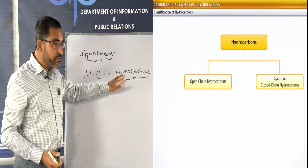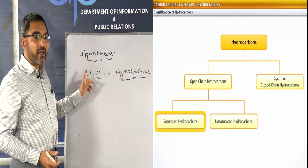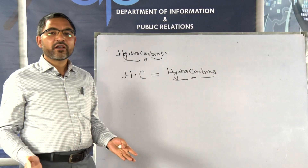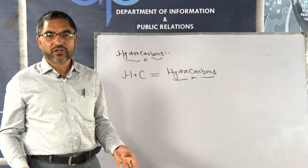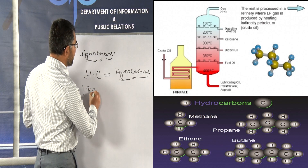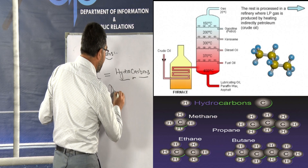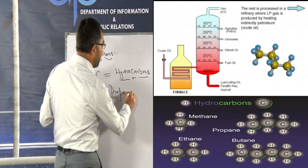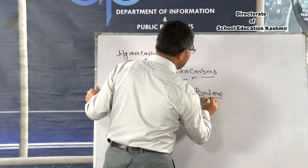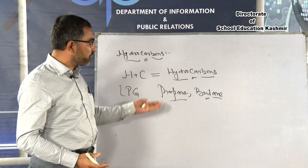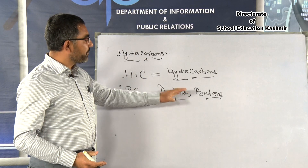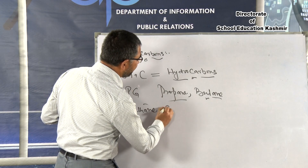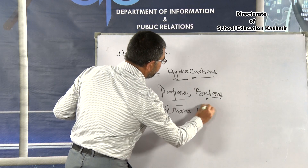Examples of hydrocarbons include LPG (liquefied petroleum gas), which is propane and butane — two gases compressed under high pressure in cylinders, obtained from natural gas and petroleum. Other examples are methane and ethane. So hydrocarbons are organic compounds formed by carbon and hydrogen, and these hydrocarbons have been classified into two categories.